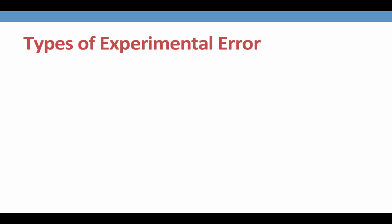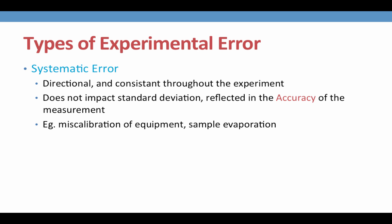So in discussing error, we can broadly categorize it into two types. First is systematic error. Systematic error is directional. This means that systematic sources of error will always cause a measurement to be either high, or always cause it to be low, compared to the known value. And they are consistent throughout the experiment.